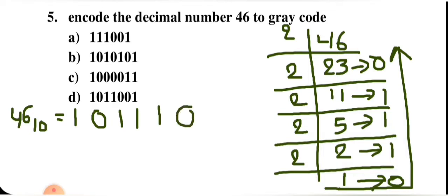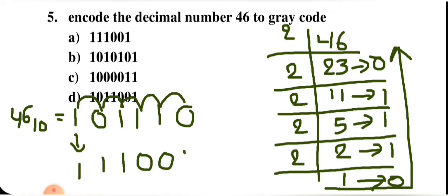Now converting binary 101110 to Gray code: the first bit remains the same (1). Then XOR adjacent bits: 1 XOR 0 = 1, 0 XOR 1 = 1, 1 XOR 1 = 0, 1 XOR 1 = 0, 1 XOR 0 = 1. So the Gray code of 46 is 111001.